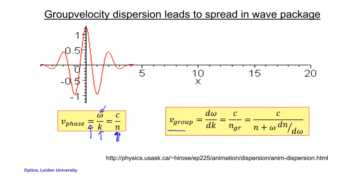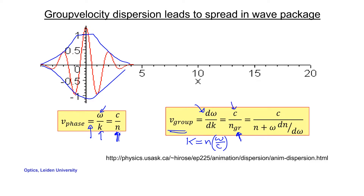If you look at the package — the envelope — you'll see that it can move at a different velocity, given by the derivative of ω with respect to k. Plugging in the numbers, and realizing that k is ω over c, you'll find that the group velocity is the speed of light divided by the group index, where the group index is not necessarily the same as the phase index but also contains a contribution due to dispersion — the frequency variation in the refractive index.